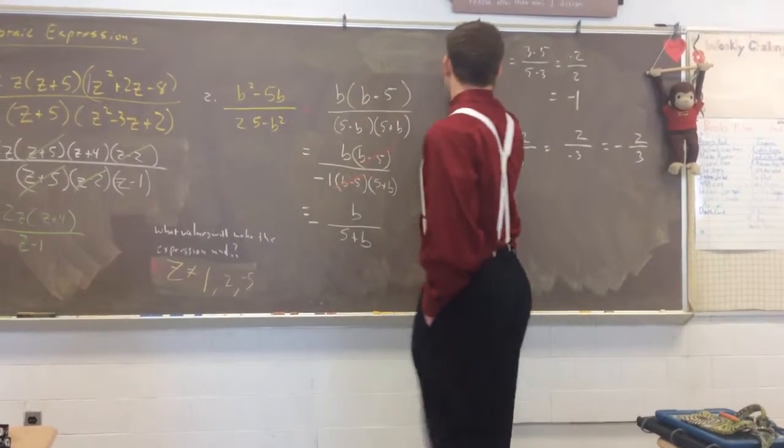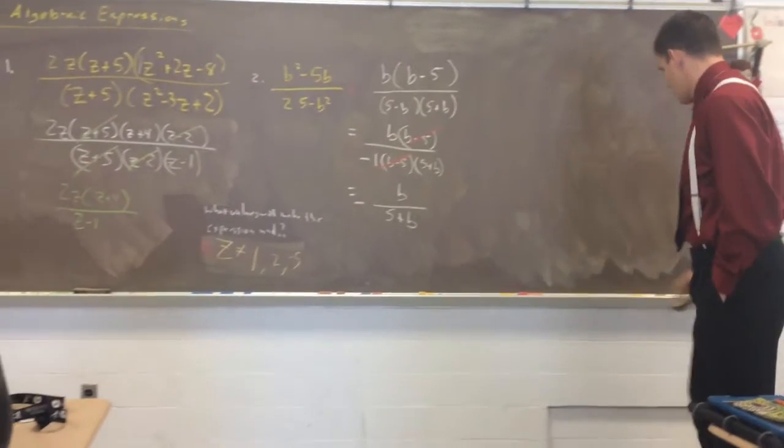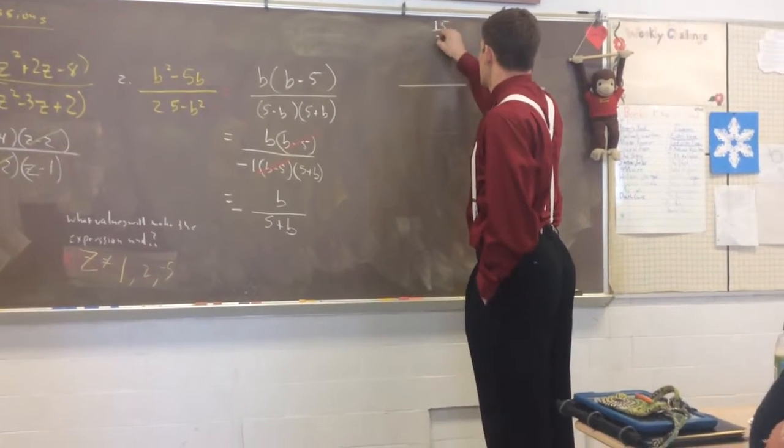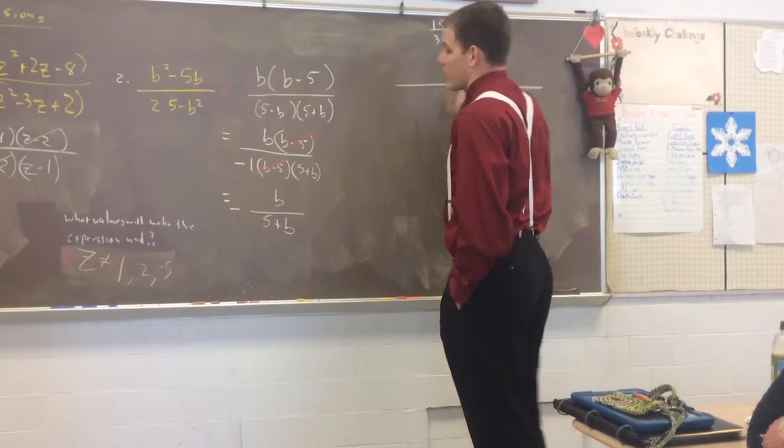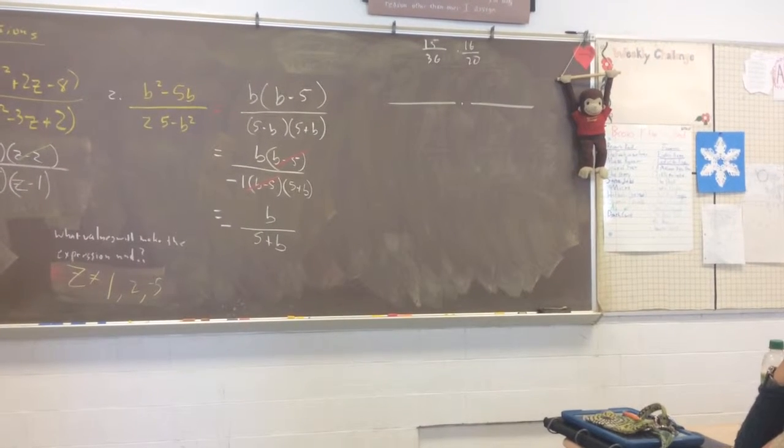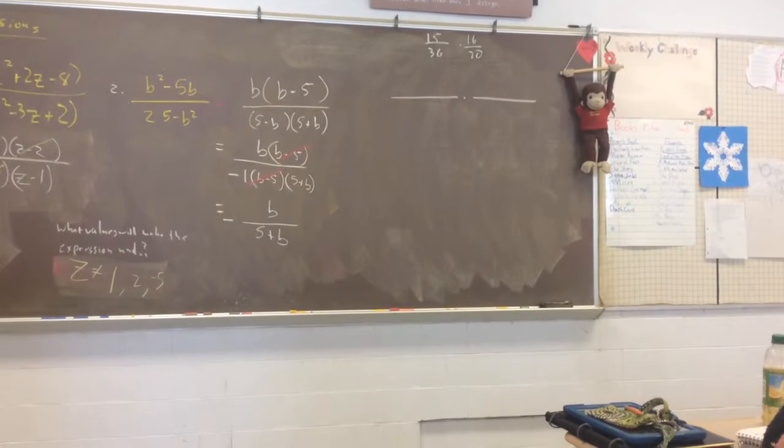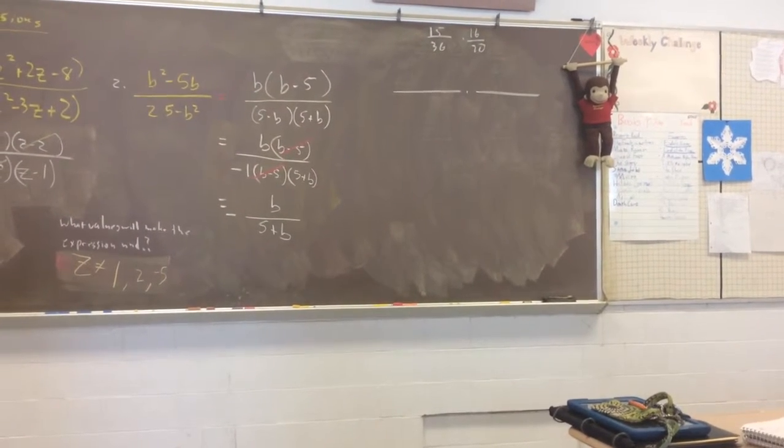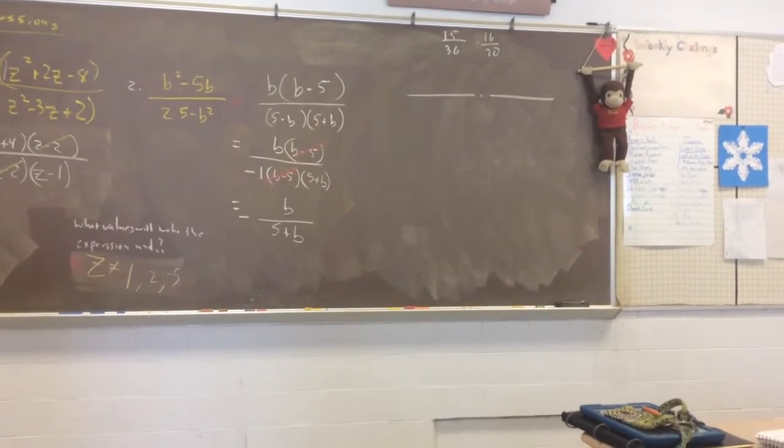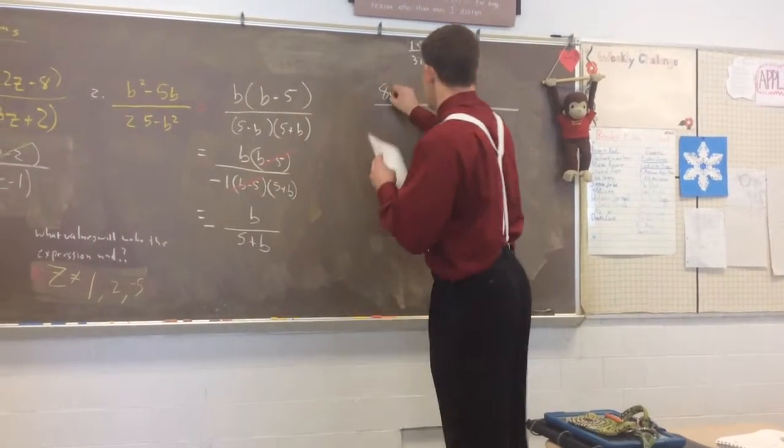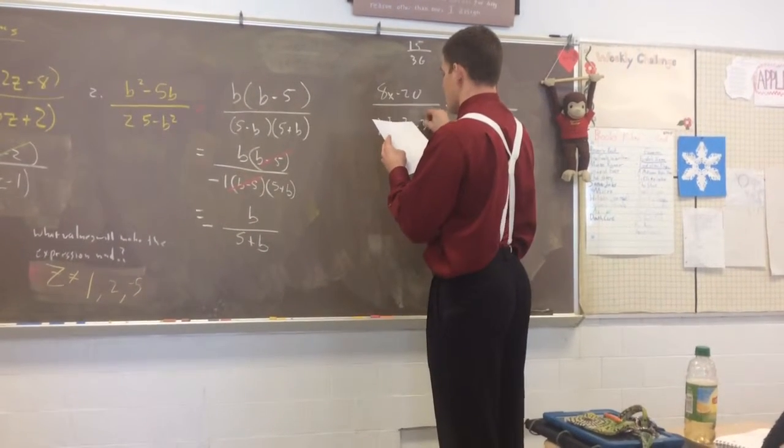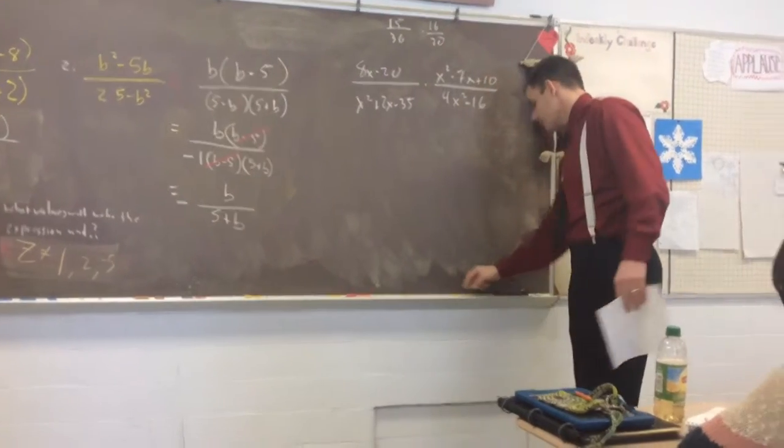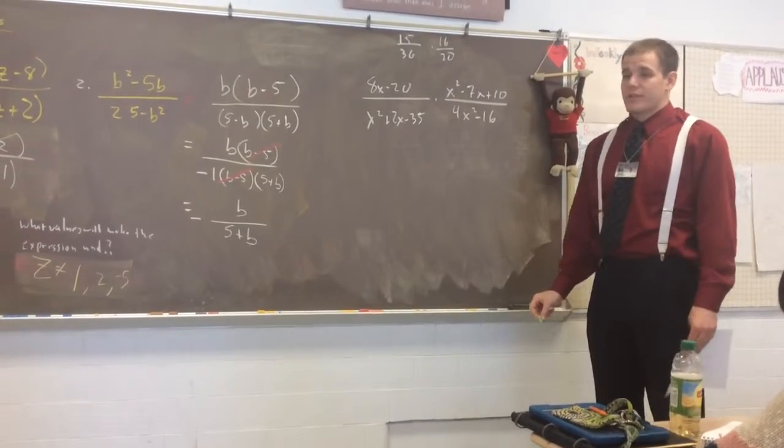So, that's dealing with regular fractions. What if we're multiplying two fractions? If I said 15 over 36 times 16 over 20, would you multiply that straight across right now? No. You'd be doing some cross-canceling, wouldn't you? We're going to do the same thing. We're going to cross-cancel. But first, we've got to figure out all the factors. So, let's write them down: 8X minus 20. X squared plus 2X minus 35. X squared minus 7X plus 10. 4X squared minus 16. I'm going to pause a moment and let you factor the different parts.